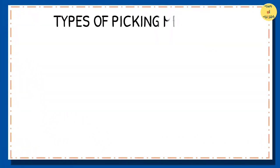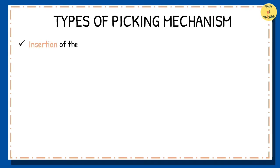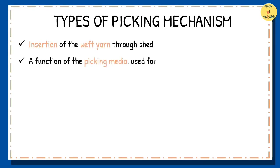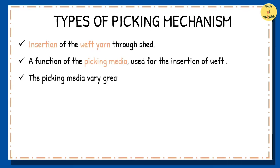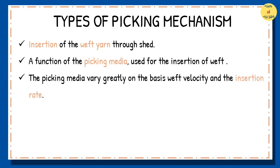Picking involves the insertion of the weft yarn through the shed across the width of the warp sheet. The picking mechanism is mainly a function of the picking media used for the insertion of weft. The picking media vary greatly on the basis of weft velocity and the insertion rate, and are classified into shuttle and shuttleless picking.